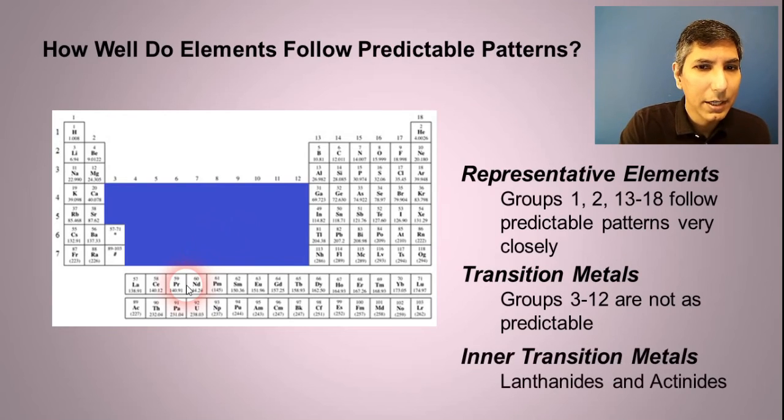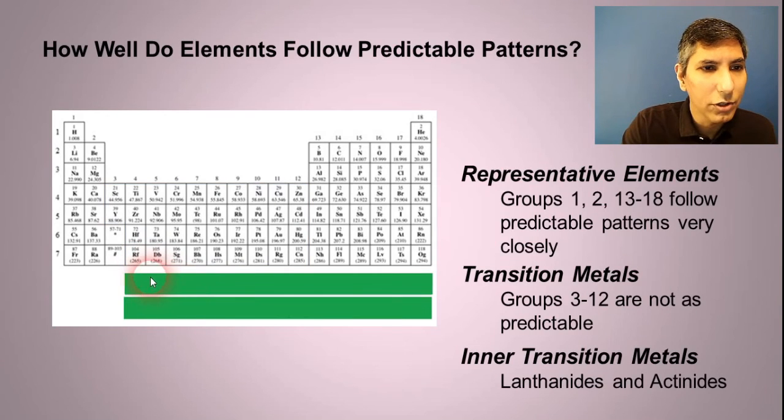Then we have these two sections here that look like they've been pulled out of the body of the table. Those are called the inner transition metals. We sometimes call those the lanthanides and actinides because the first member of this section here is lanthanum, so the lanthanides. And then the one down here is actinium, so those are the actinides in the second section.